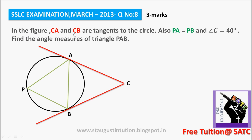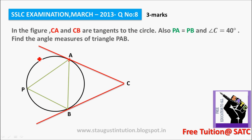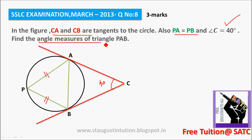In the figure, CA and CB are tangents drawn from the point C to the circle. CA and CB are tangents. Also, PA is equal to PB. Angle C is given and it is equal to 40 degrees. The question is: find the angles of triangle PAB.